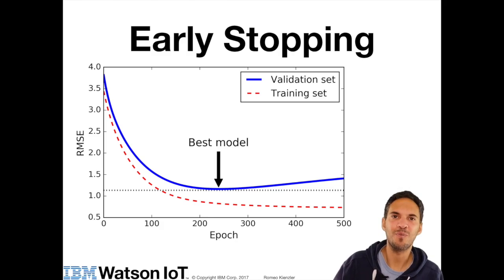You can always monitor the training accuracy and the validation accuracy, or the training loss and the validation loss during training. Once the validation loss goes up and the training loss still goes down, you can just stop training and you also obtain a more general model.